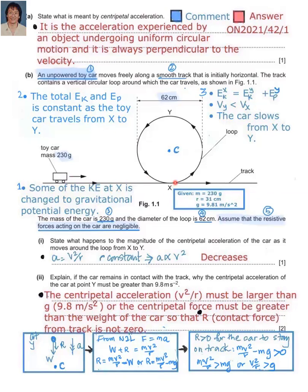However, when the car moves from X to Y, some of the kinetic energy at X will be converted to gravitational potential energy as the toy car gains height. The toy car will lose kinetic energy but gain an equal quantity of potential energy. The total kinetic energy E_K and gravitational potential energy E_P remain constant as the car travels from X to Y. The relationship is: E_KX = E_KY + E_PY. So the car slows down from X to Y. You need to know the principle of conservation of energy and energy conversion.